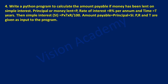Principal or money lent is equal to P, rate of interest is equal to R percentage per annum, and time is equal to T years. Simple interest SI is equal to P into T into R divided by 100. Amount payable is equal to principal plus SI. P, R and T are given as input to the program.